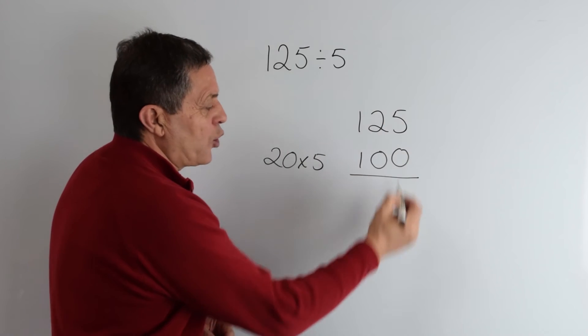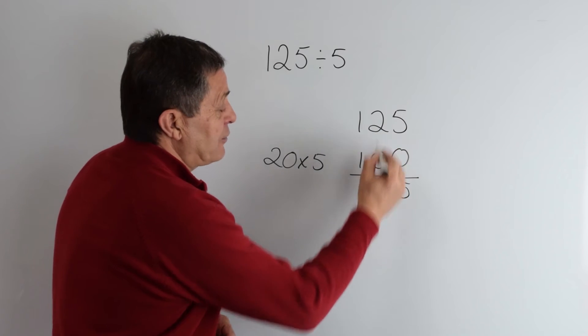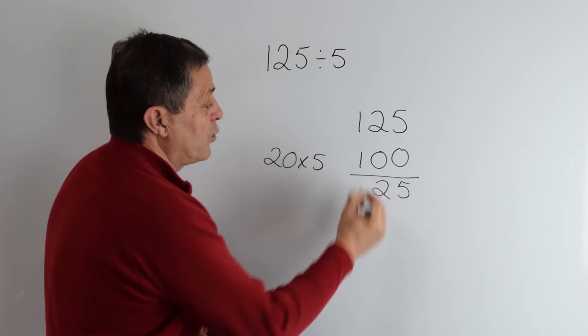We take that chunk away from our number, 0 from 5 is 5, 0 from 2 is 2, 1 from 1 is 0.